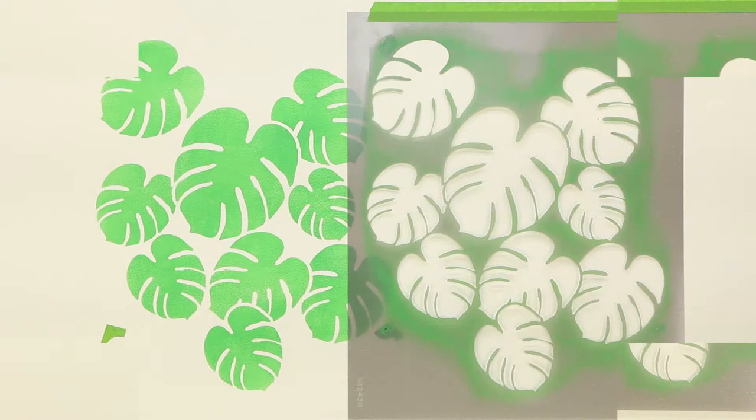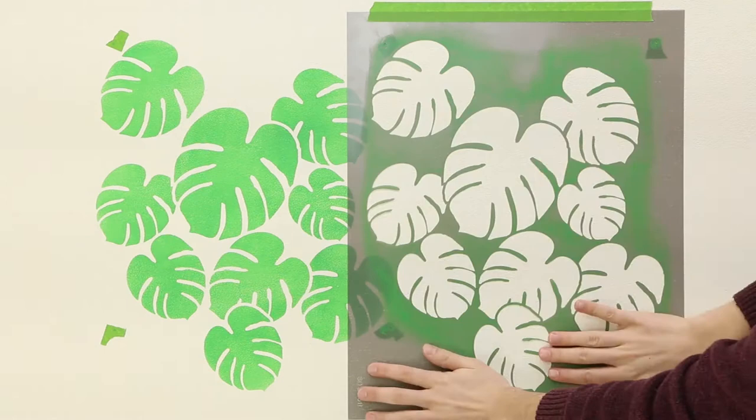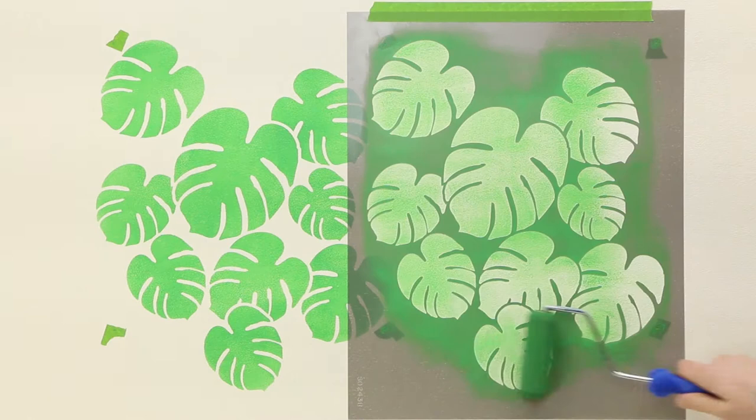Press the stencil design in place and add frog tape beneath the registration marks on the opposite side. With the stencil in position, you are ready to begin rolling paint through the design.